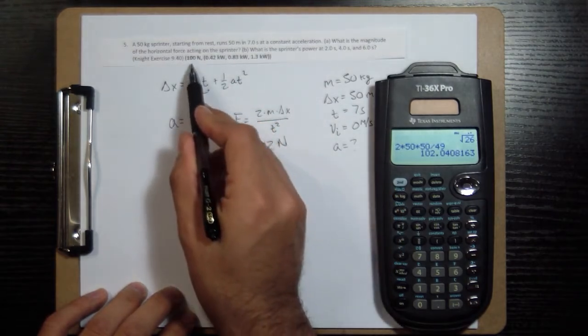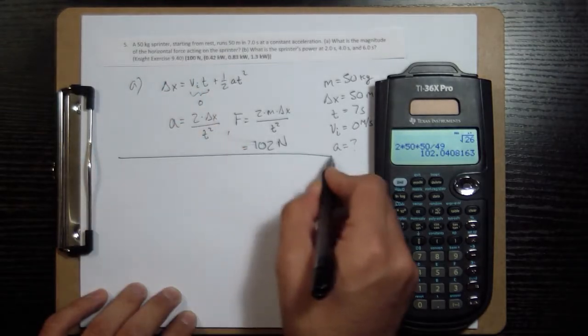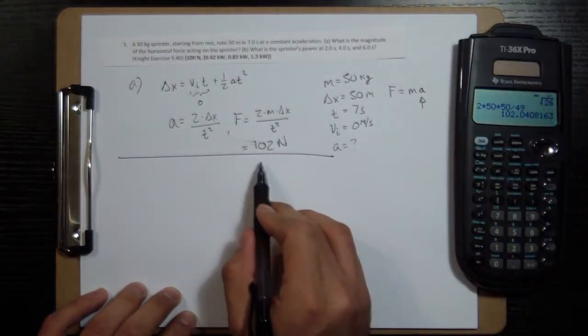Just close enough to the 100 newtons that we show here. 100, 102. So that's part A. Part A is easier. Part B, what we need is we want to find the sprinter's power at the various times.